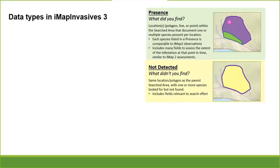We also have a not-detected record type — what didn't you find? You went out specifically with the search image in mind for a species or group of species, searched that area, but did not find it. So this record type is absence data. It's super valuable, especially as people get into more modeling of distributions where absence data is really important.